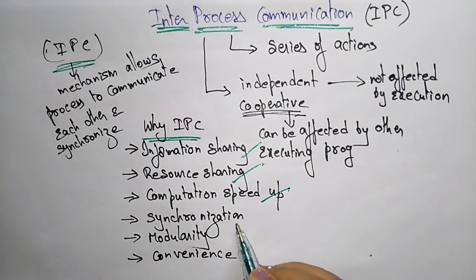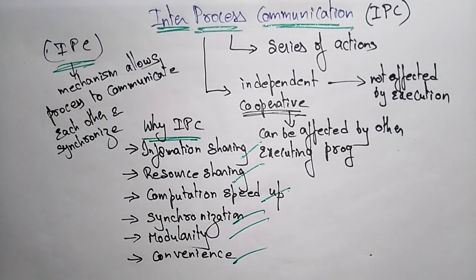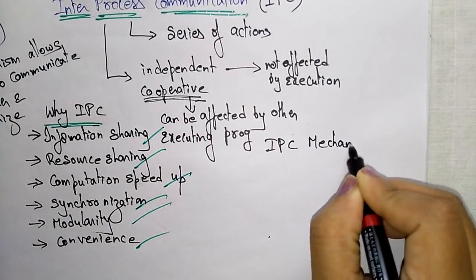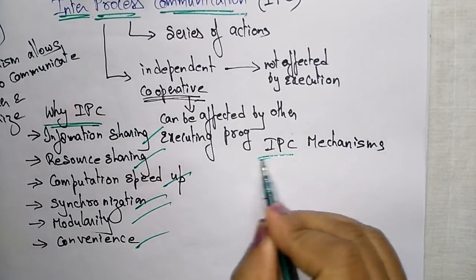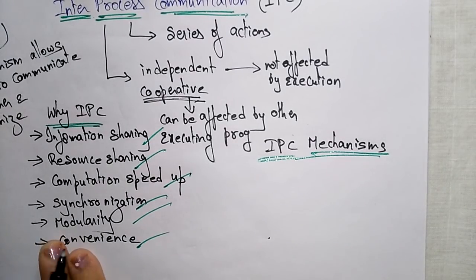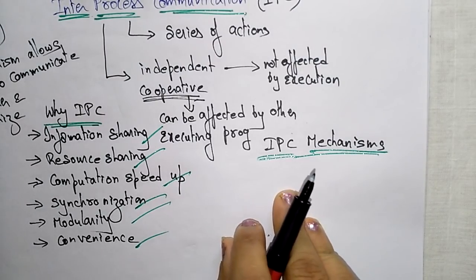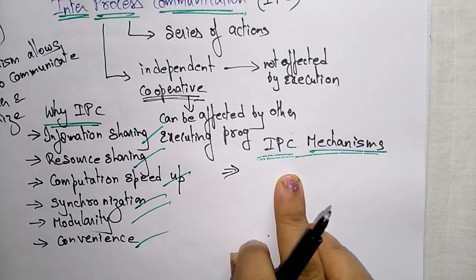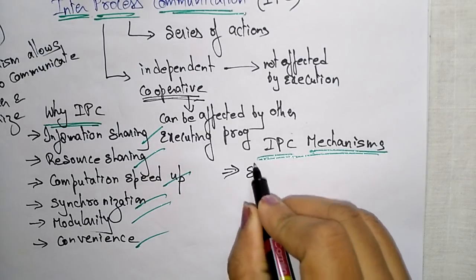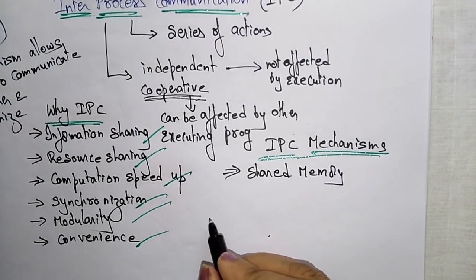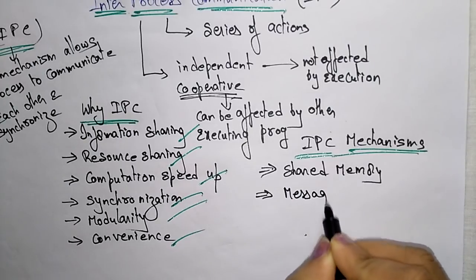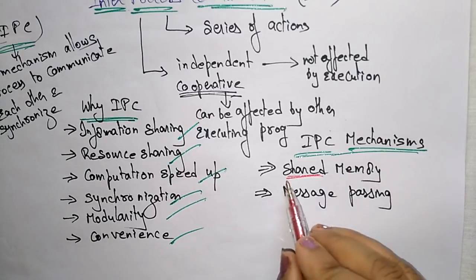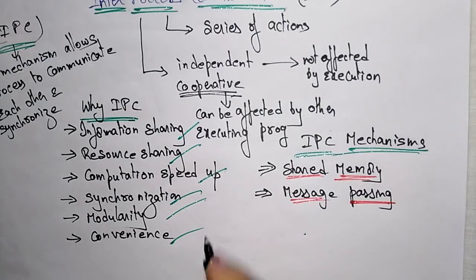So for these reasons — information sharing, resource sharing, computational speed-up, synchronization, modularity, and convenience — we use Inter-Process Communication. Now, coming to the IPC mechanisms: processes can communicate with each other using two ways — shared memory and message passing.